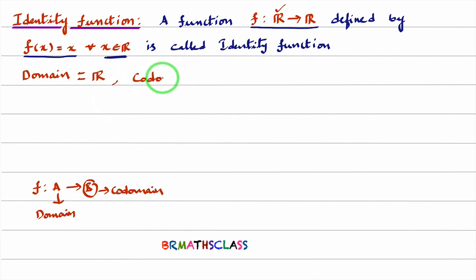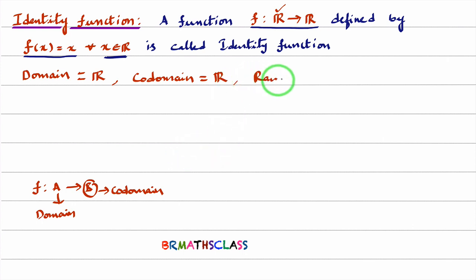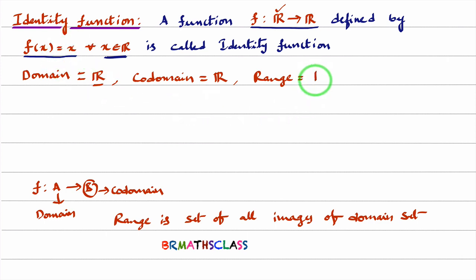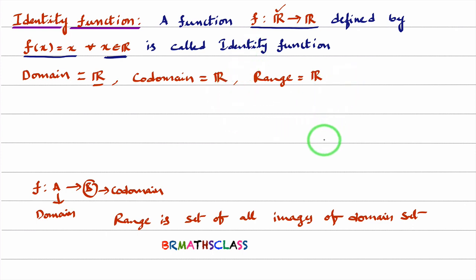What is the co-domain? Since f is a function from A to B, set B is called the co-domain. This is a function from R to R, so the co-domain of the identity function is all real numbers. The range is the set of all images of the domain set. Since f(x) = x and the domain is all real numbers, when x is a real number its image is also a real number. So the range of the identity function is also the set of all real numbers. Domain, co-domain, and range of the identity function are all the set of all real numbers.